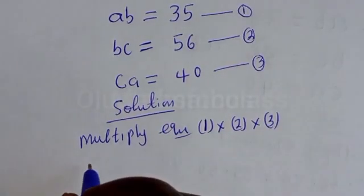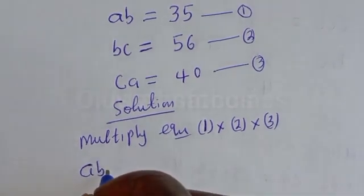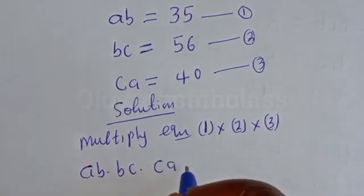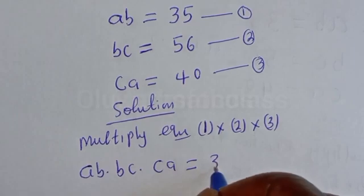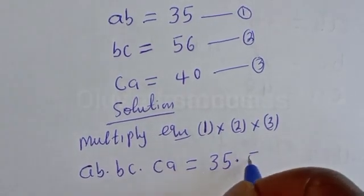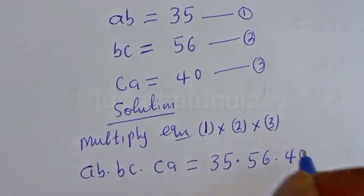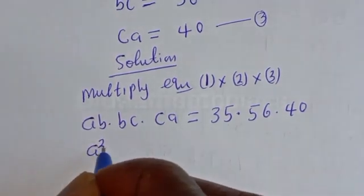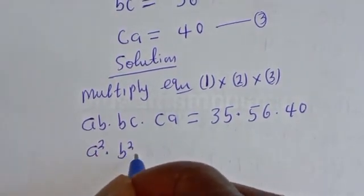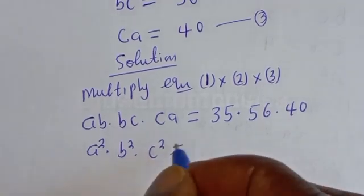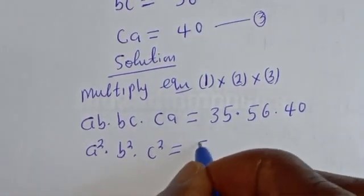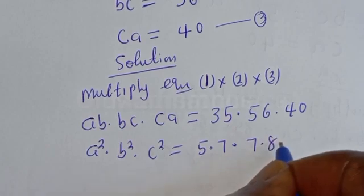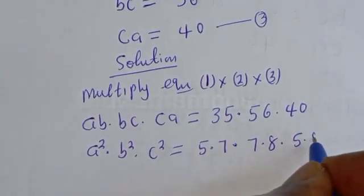Let's multiply equations 1, 2, and 3 together. Then AB multiplied by BC multiplied by CA is equal to 35 multiplied by 56 multiplied by 40. Breaking these down: 35 is 5×7, 56 is 7×8, and 40 is 5×8.